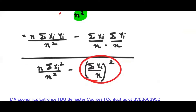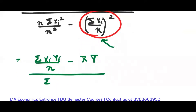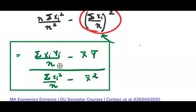Now it is clear: Σxᵢ/n is x̄, Σyᵢ/n is ȳ. So we can write: β₂ hat = [Σxᵢyᵢ/n − x̄ȳ] / [Σxᵢ²/n − x̄²]. You can directly remember this formula for the exam and use it directly without deriving it — it can be used as-is.